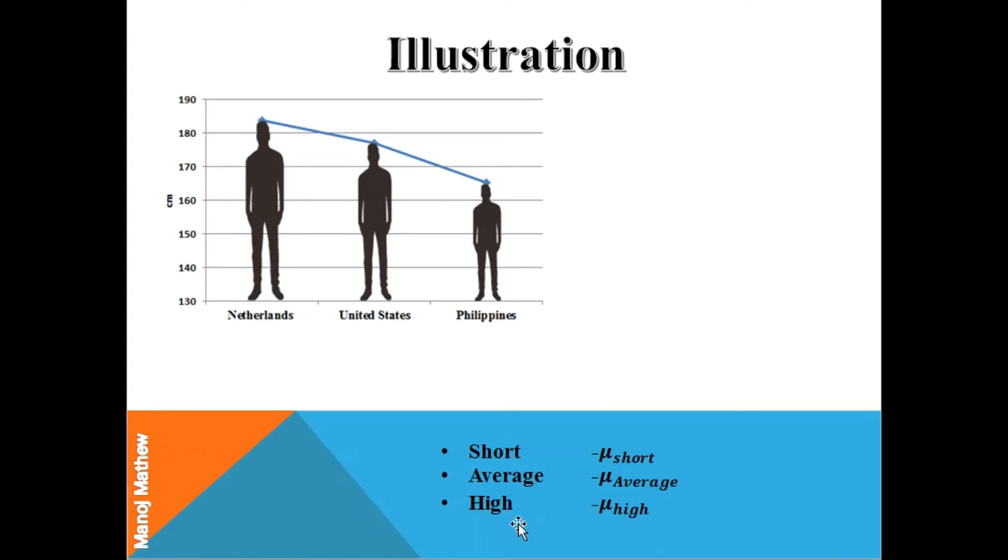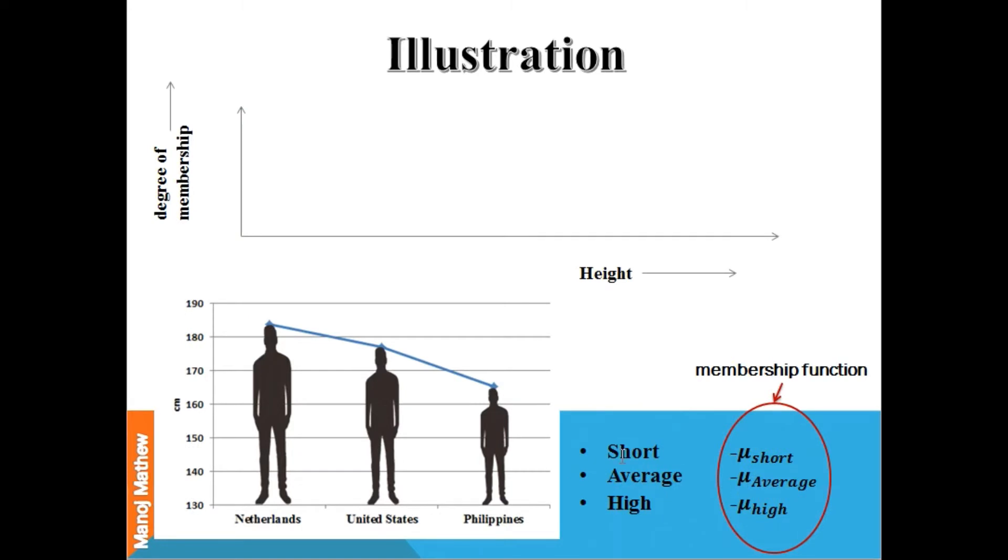What are these membership functions? In our example, it is a function that defines the relationship between height, which is an independent variable, and a dependent variable known as degree of membership. The value of degree of membership lies between 0 and 1.